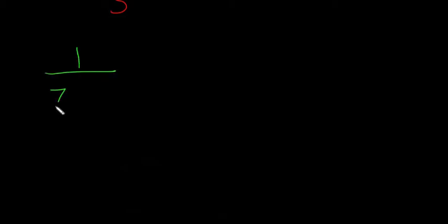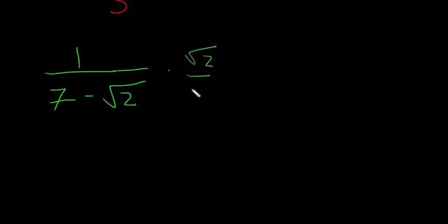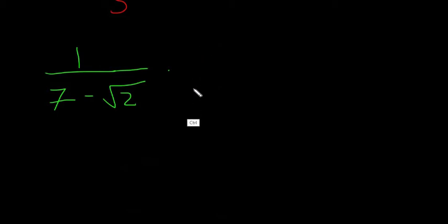So we're going to do another example that's a little bit more difficult: 1 divided by (7 minus the square root of 2). Again, we can't divide something by a square root, and we can't just multiply it by √2 over √2. So we're going to have to do something different — in this case we multiply it by something called the conjugate.